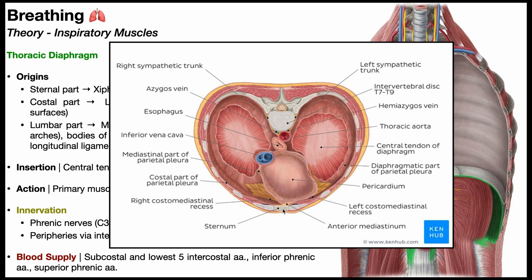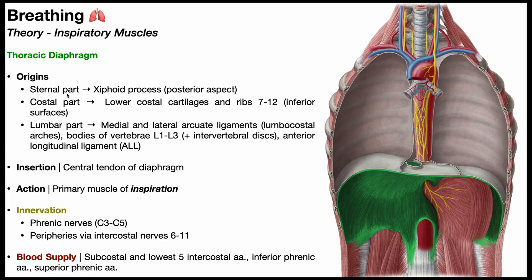The most inferior part of the sternum is the xiphoid process. The sternal part of the diaphragm attaches on the posterior aspect of the xiphoid process. The costal part of each hemidiaphragm originates from the lower costal cartilages and ribs 7 through 12 — specifically the inferior surfaces of those costal cartilages and ribs 7 through 12.